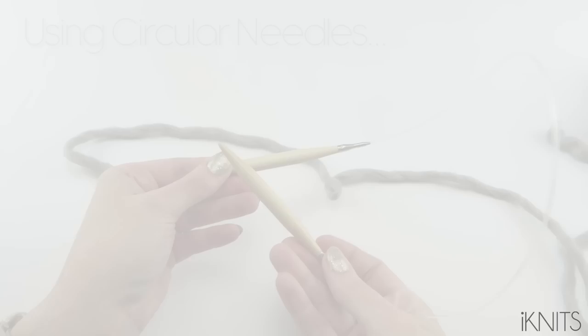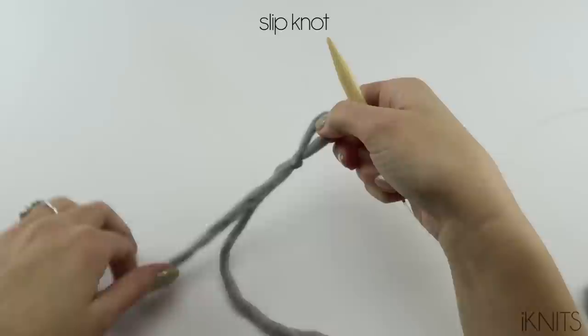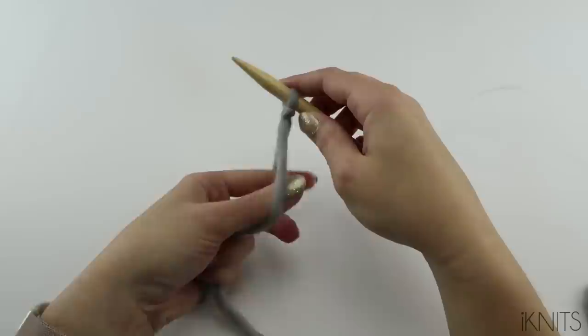To use circular needles. We have our long tail. We do our little slip knot. And then put our needle through and tighten it.